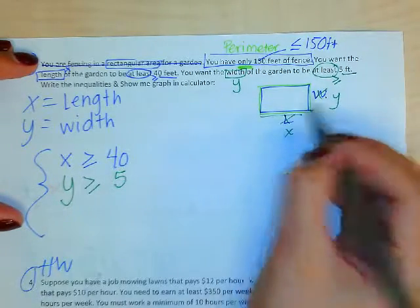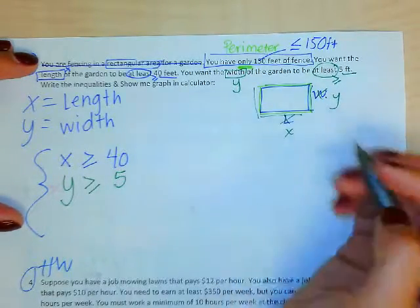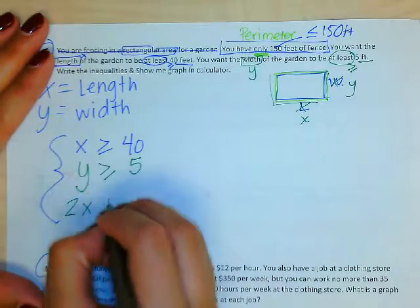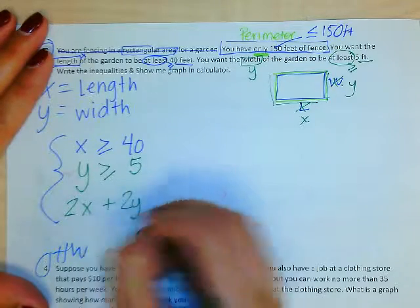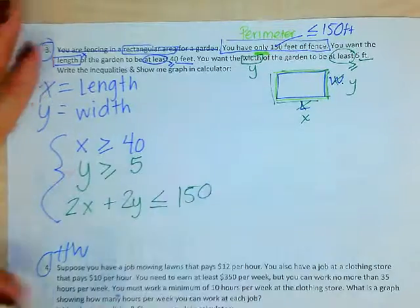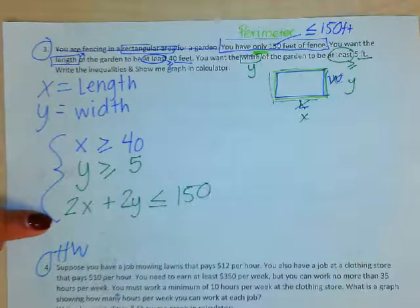Well, I need to add all the sides, right? x plus y plus x plus y. Or, like your shortcut formula tells you, 2x plus 2y has to be less than or equal to 150. And those are my inequalities for number 3.